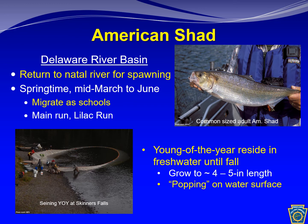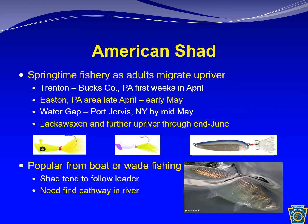A second mass migration, termed a lilac run, generally follows a few weeks later, usually when the lilac bushes are in bloom. The young-of-year reside in the Delaware River through the summer and fall months prior to emigrating to the Atlantic Ocean. You can usually see these in the late summer as they pop on the surface of the water. The main run follows a south-to-north pattern, arriving in the lower Delaware River at Trenton within the first few weeks of April, and then proceeds farther upriver as time goes by.